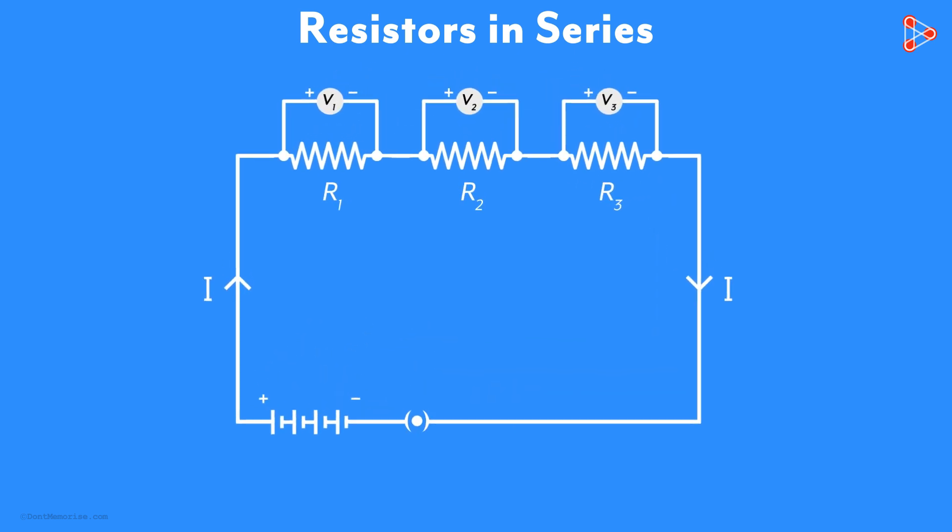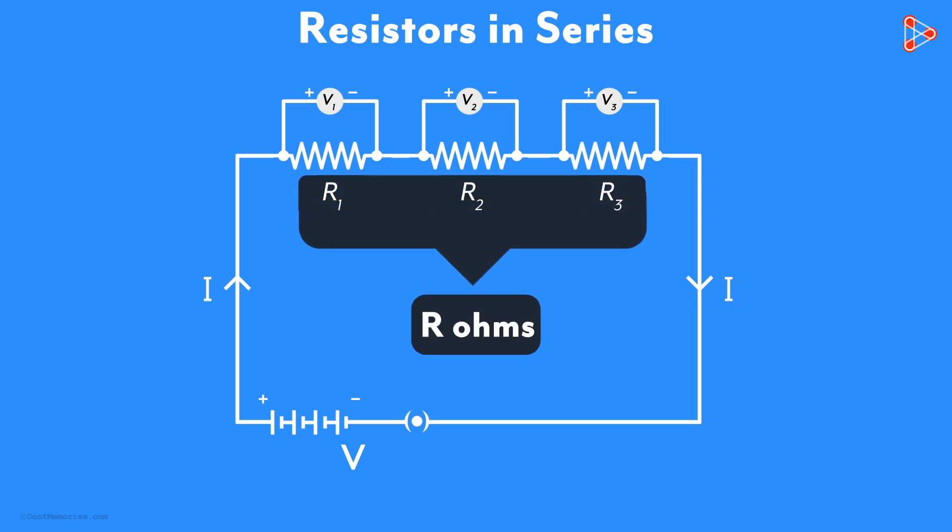Look at the entire circuit first. The potential difference is V volts and the current flowing through it is I amperes. Let's say these three resistors together form a resistance R ohms.